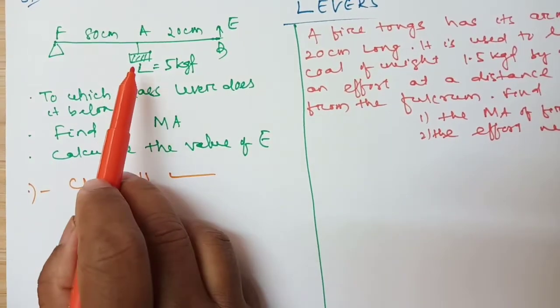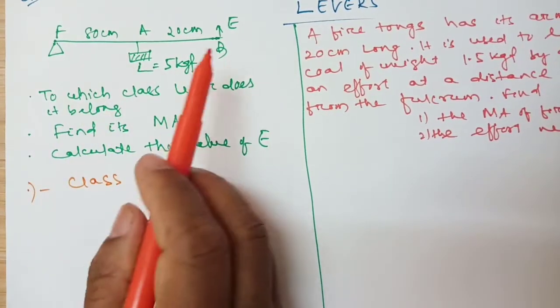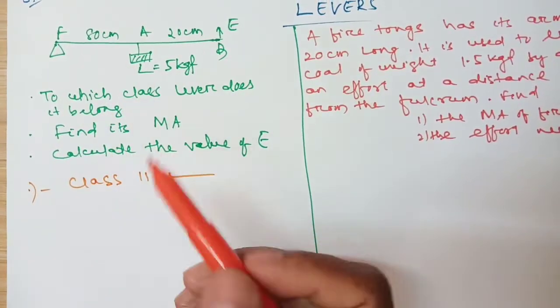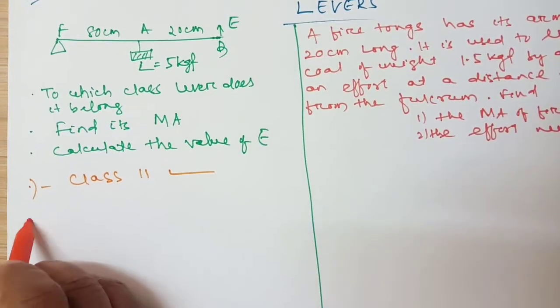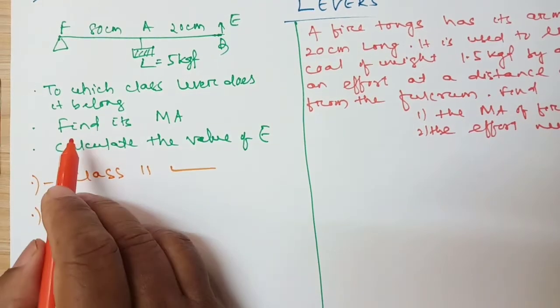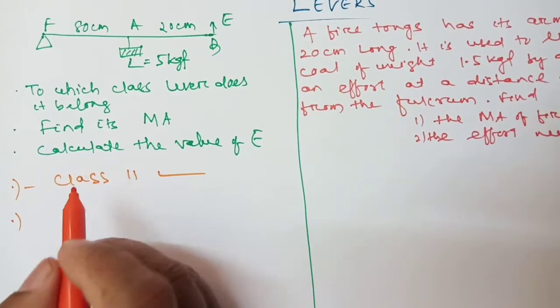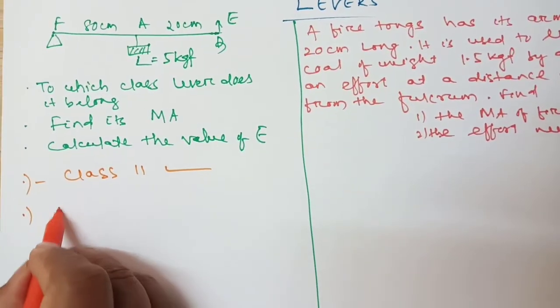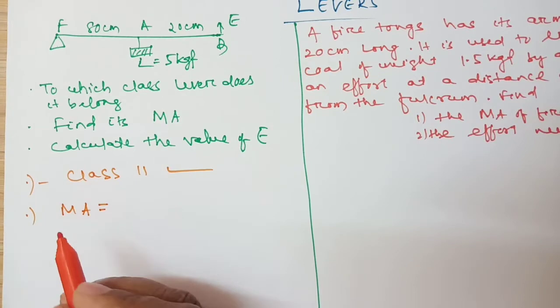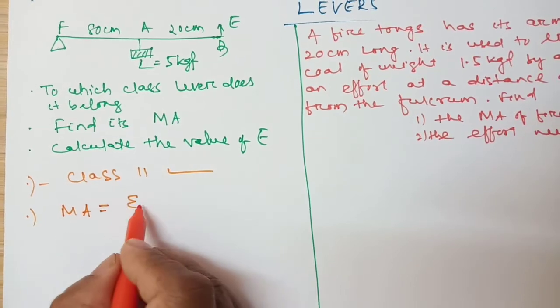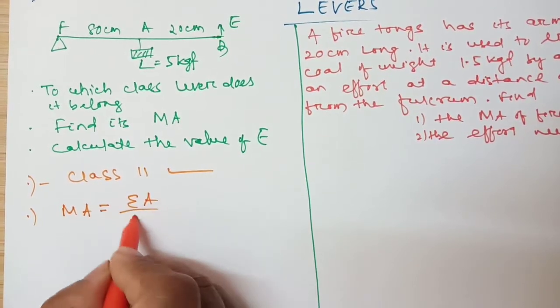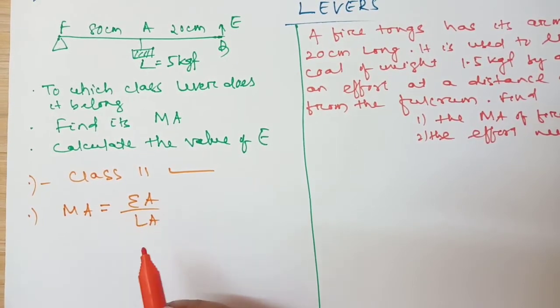Remember: if load is present between fulcrum and effort, that is a class 2 lever. Second question: find the mechanical advantage (MA). The formula for mechanical advantage is effort arm divided by load arm.